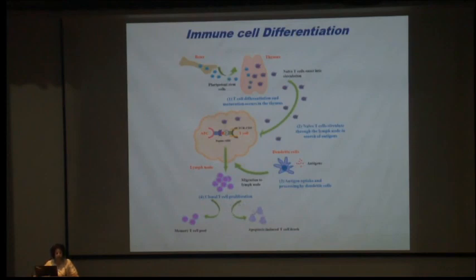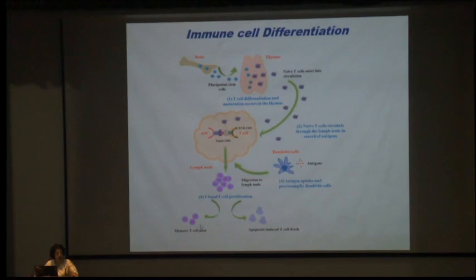There is apoptosis of those T cells which have already seen the antigen and for which there is no further need for proliferation, but a few T cells stay back as a memory T cell pool. This is the homeostasis of the immune response.